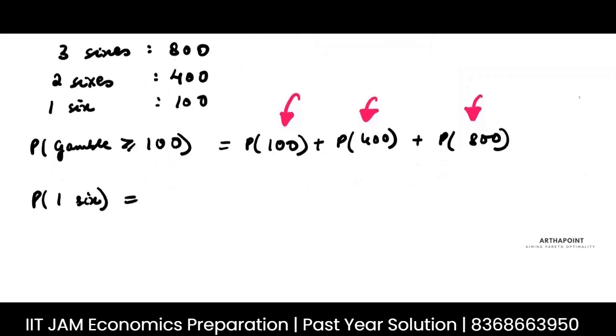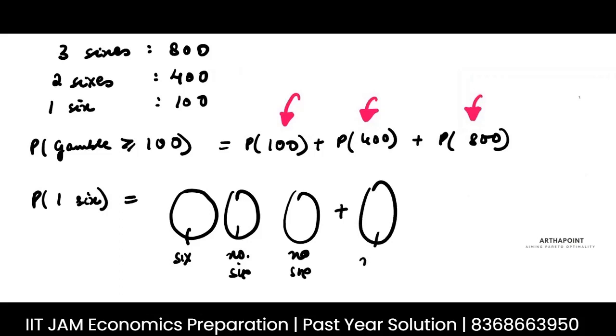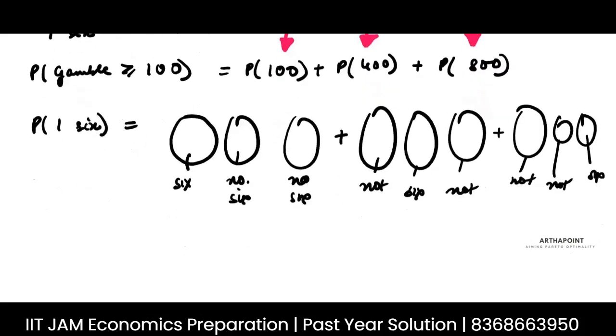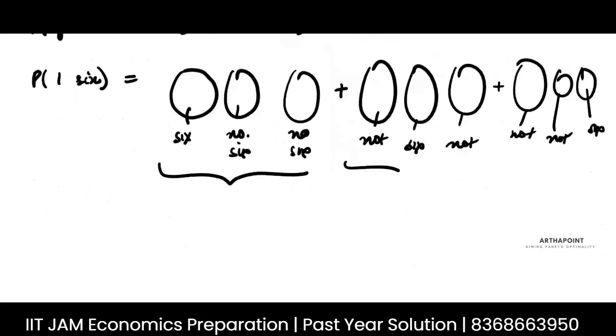This means imagine I am throwing three dice. The first dice gave me a six, but the second, any other option, no six, and the third also no six. Or there can be various permutation combinations. This is not giving any six, this is giving six, this is not giving any six.